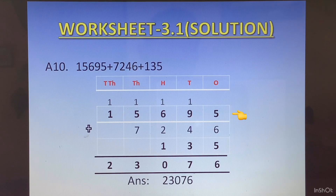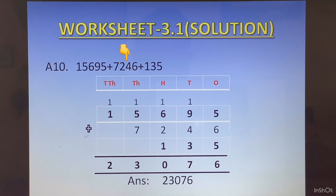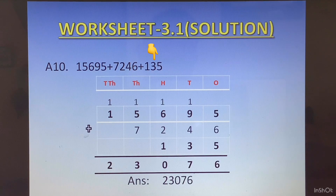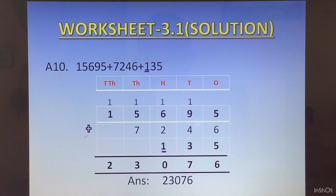The first number you can write without any problem. But when you write the second number, you have to be careful. You will start writing from the right side. For 7246, you write 6 first under the ones column, then 4 under the tens column, then 2 under the hundreds column, and then 7 under the thousands column. Next number is 135. Again start from the right: 5 in the ones column, 3 in the tens column, and 1 in the hundreds column.